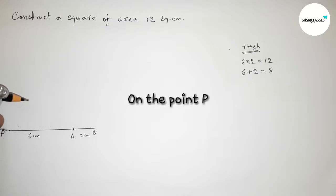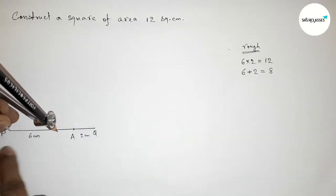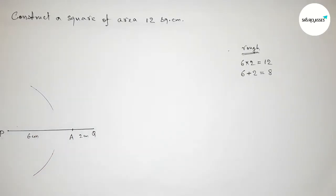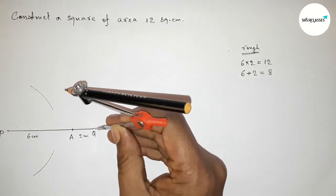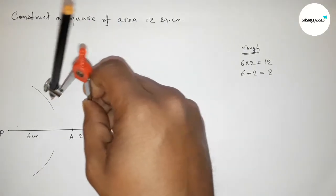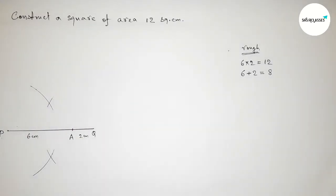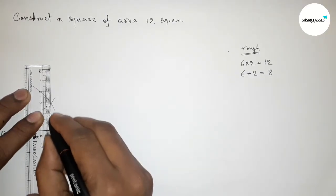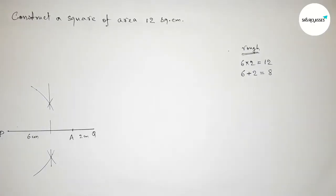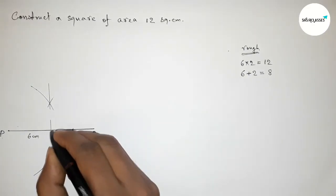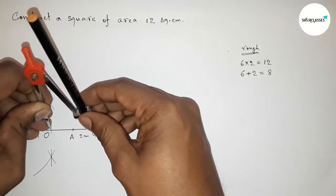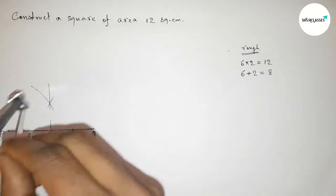Next we have to bisect the line PQ with the help of a compass. Putting the compass on point A, taking greater than half of PQ, and drawing arcs above and below. Then taking the same length, putting the compass on point Q, and cutting arcs. Joining this line, which bisects PQ — taking this midpoint as O.